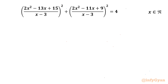Welcome back to Infigr, my dear friends. In today's video we have one very interesting rational equation problem where we have to calculate real solutions. The equation is: (2x² - 13x + 15) / (x - 3)² + (2x² - 11x + 9) / (x - 3)² = 4.